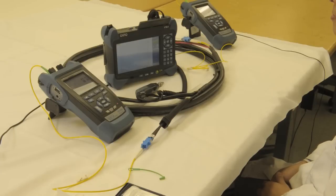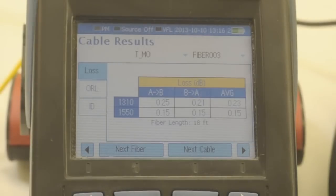This is going to calculate our insertion loss and return loss at the same time. We'll check our results. At 1310 from A to B is 0.25, from B to A is 0.21. At 1550 it's 0.15 A to B and B to A is also 0.15.